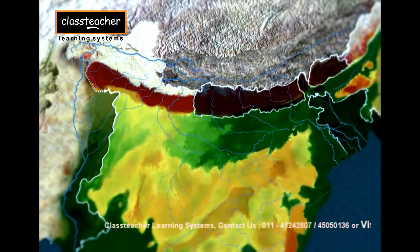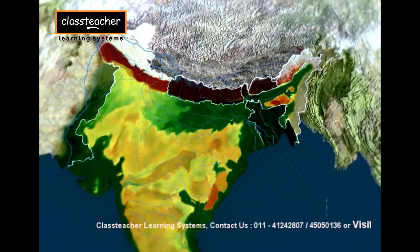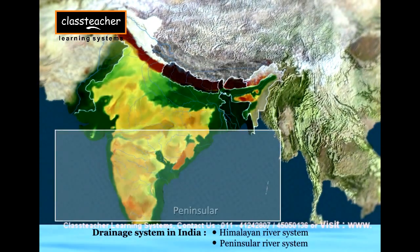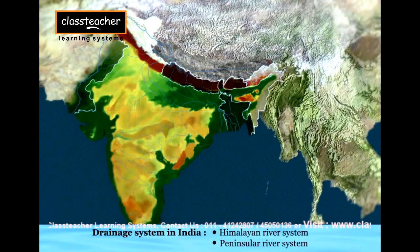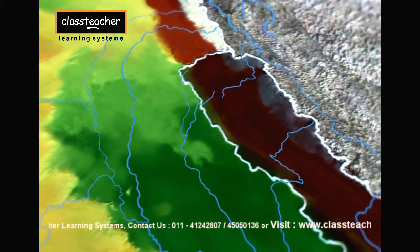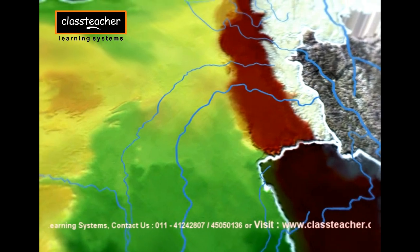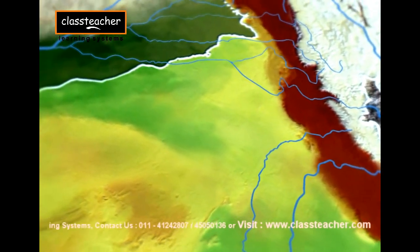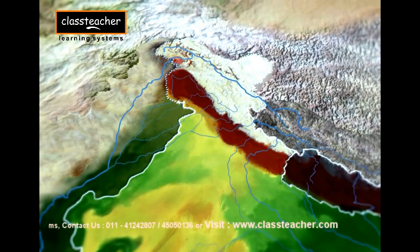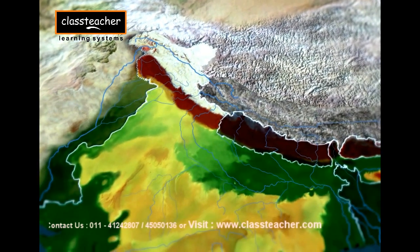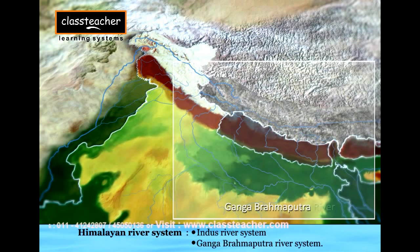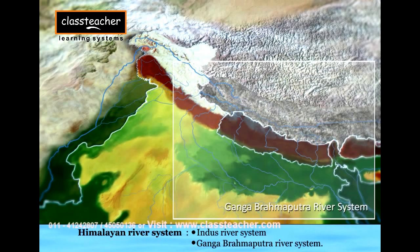Indian river system is broadly divided into two groups: the Himalayan river system and the peninsular river system. The rivers of the Himalayan river system drain the northern region of the country. These rivers are snow-fed and thus have perennial flow of water. The Himalayan river system is itself subdivided into the Indus river system and the Ganga-Brahmaputra river system.